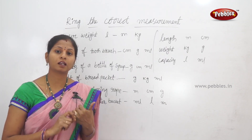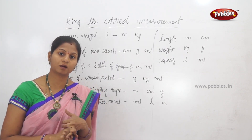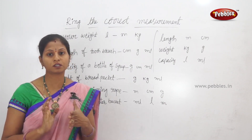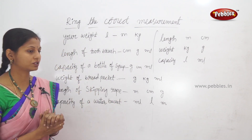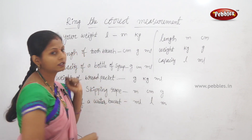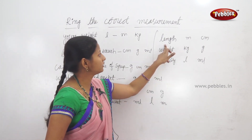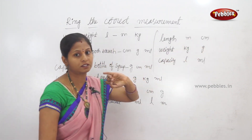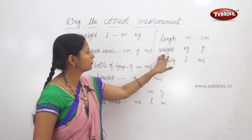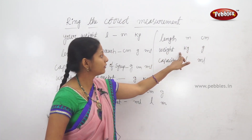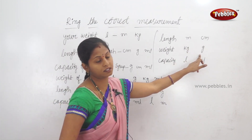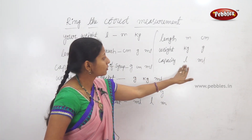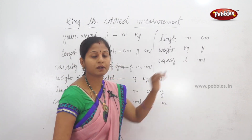We will do length, weight, and liquids. We will do correct answers here. Recall: long length — we measure in meters and centimeters. A lot of weight — we can measure in kilos and grams. Heavy weight in kilos, light weight in grams. Capacity: we have liters and milliliters. Small quantities in milliliters, large quantities in liters.